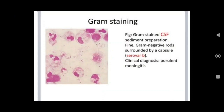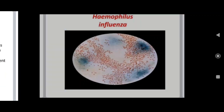In gram staining, the picture shows a gram staining of CSF sediment preparation: fine gram-negative rods appear surrounded by a capsule. This is clinically diagnosed as purulent meningitis. The diagram shown is of purulent meningitis, showing the appearance of this bacillus — gram-negative rods surrounded by a capsule.